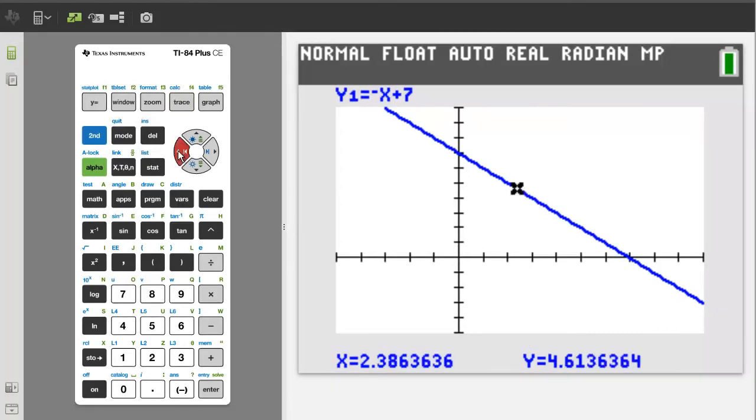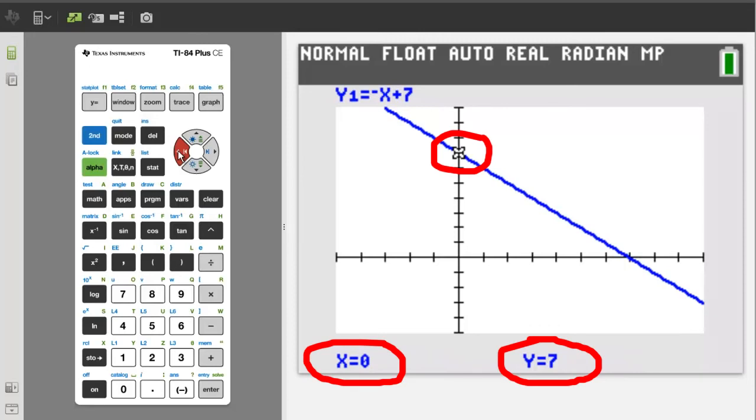Using the arrow buttons I will move up along the line to the y axis. So it does appear that the line crosses the y axis at 7 with the coordinates of x equals 0 and y equals 7.